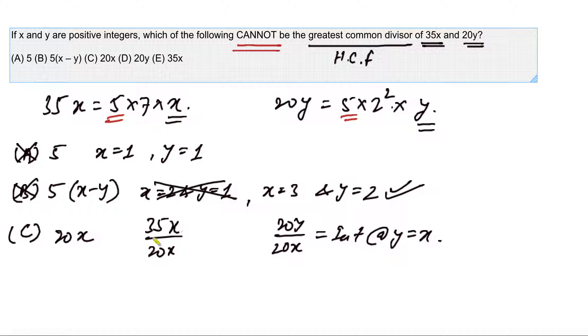But when you see 35x over 20x, it cannot be an integer because x can be cancelled out and 35 divided by 20 is not an integer. This means we can infer that option C is a number which cannot be the factor of 35x.